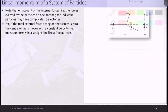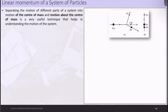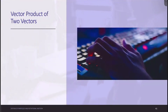The basic finding of this example is simply that as long as mass remains constant and no external force acts, regardless of whether disintegration, explosion, or any fusion occurs, we can apply the concept of linear momentum conservation to this system. Separating the motion of different parts of a system into motion of the center of mass and motion about the center of mass is a very useful technique for understanding motion.